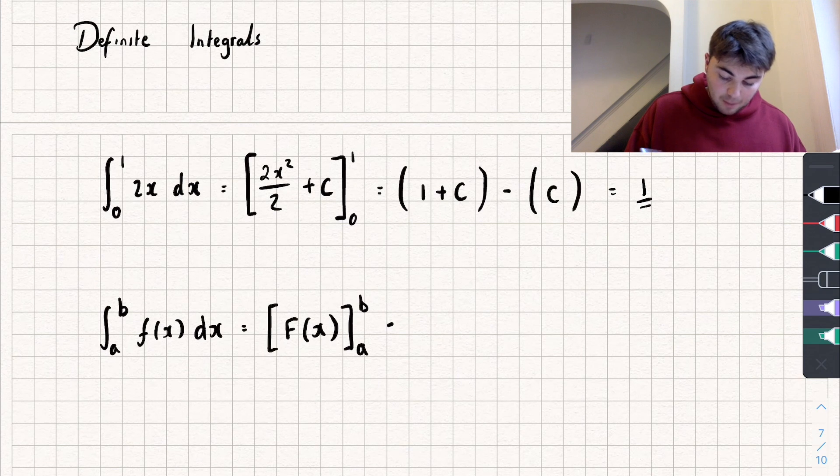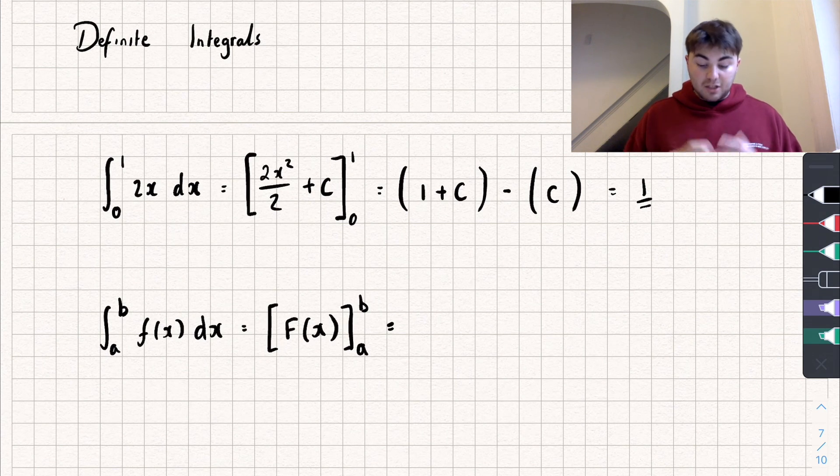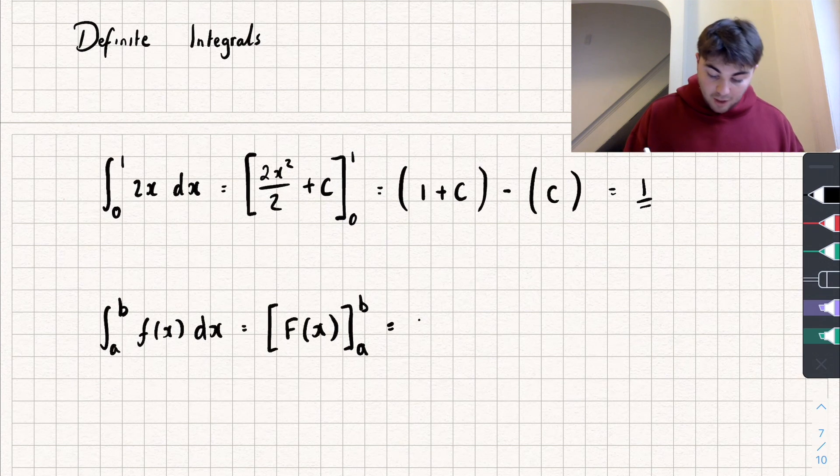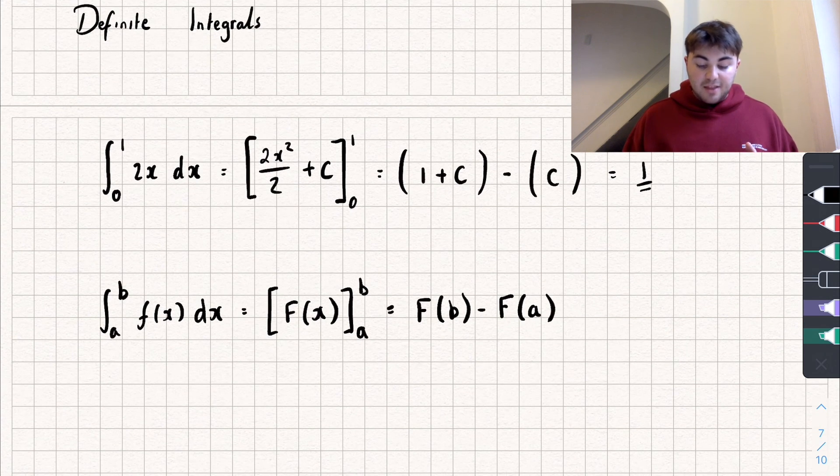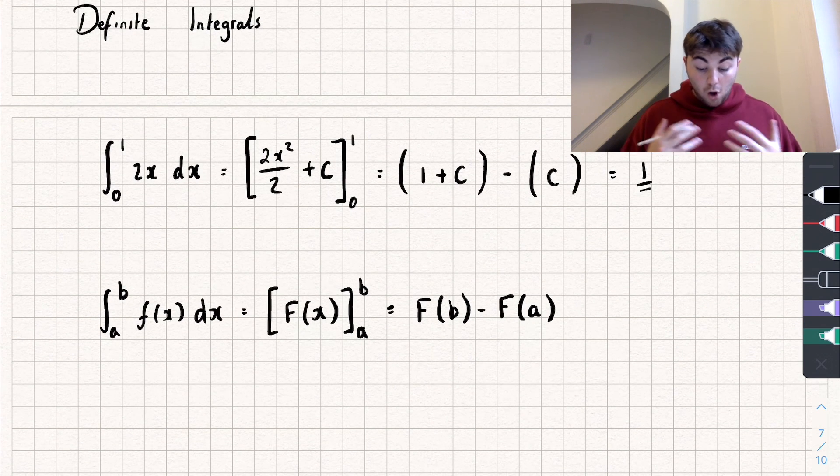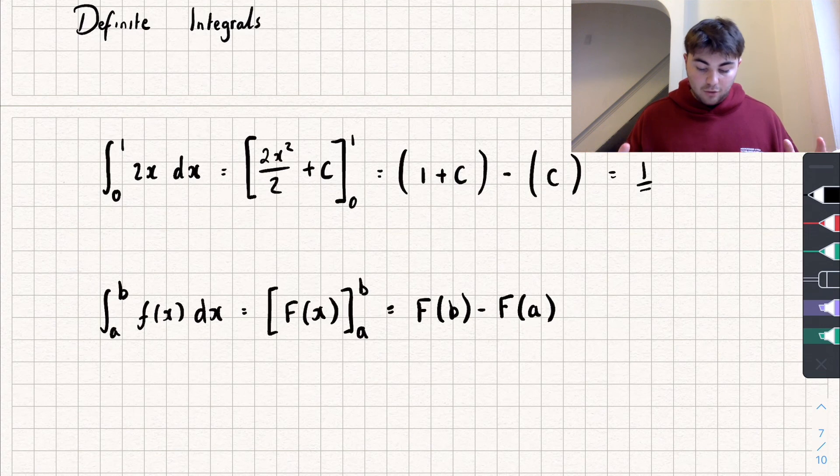And I'm going to substitute in my limits. So I'm going to substitute in my limit b first so we're going to get capital F of b and then we're going to subtract capital F of a. And so you can see here this is the generic rule of calculating a definite integral.